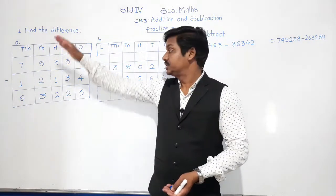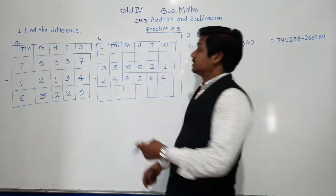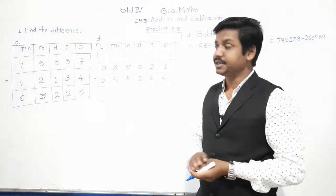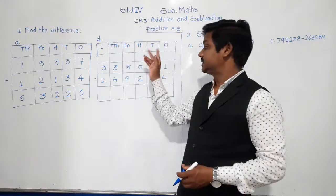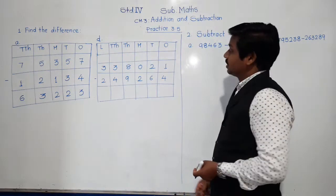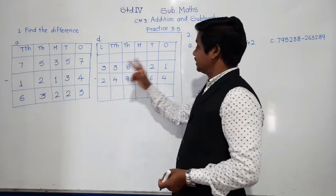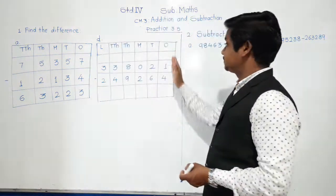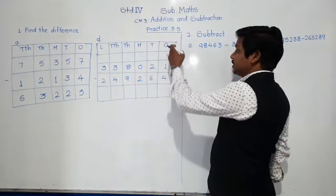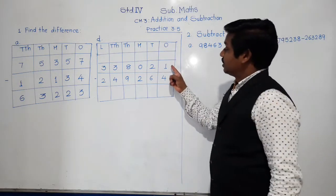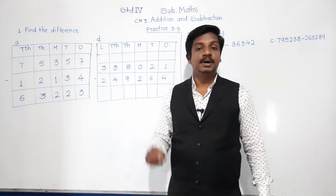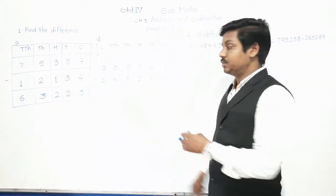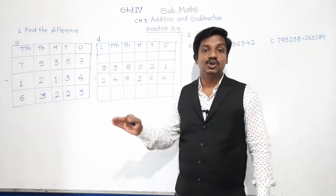Let's see example number D, because there is constant borrowing. Three lakh thirty-eight thousand twenty-one minus two lakh forty-nine thousand two hundred sixty-four. We subtract place by place — ones place first, then tens, then hundreds, and so on. At ones place: one minus four. Is it possible to subtract four from one? No, because one is smaller than four. In this case we take borrow from the next place — the tens place.